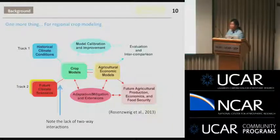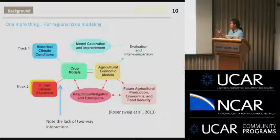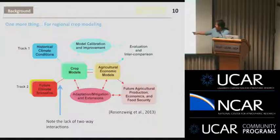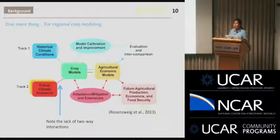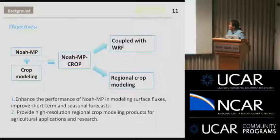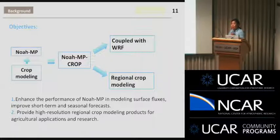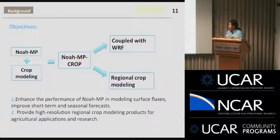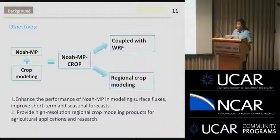This figure is from a global project called ACME. Their goal is to get regional crop modeling results to provide to agricultural economic models, then assess future agricultural production. They evaluate how future climate impacts crop production and how cropland influences future climate change. Our project objective is to combine Noah-MP with crop modeling to create a new model called Noah-MP-Crop, which will couple with WRF to improve performance in short-term and seasonal forecasting and provide higher-resolution regional crop modeling products.